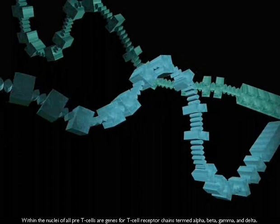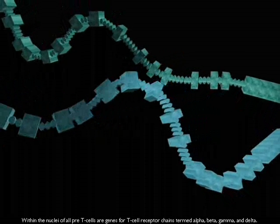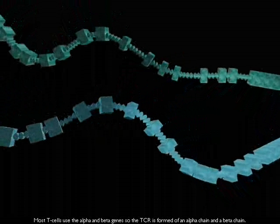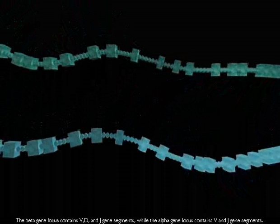Within the nuclei of all pre-T-cells are genes for T-cell receptor chains termed alpha, beta, gamma, and delta. Most T-cells use the alpha and beta genes, so the TCR is formed of an alpha chain and a beta chain.